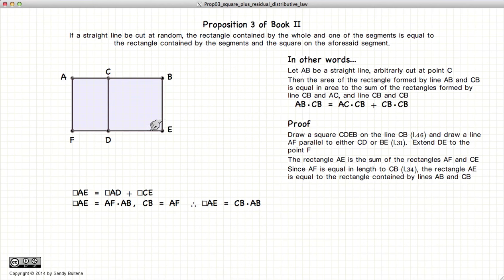But we also need to know about this rectangle AE, that it is equal to AB times AF. But AF is equal to CD is equal to CB. So in other words, this rectangle AE is equal to AB times CB.